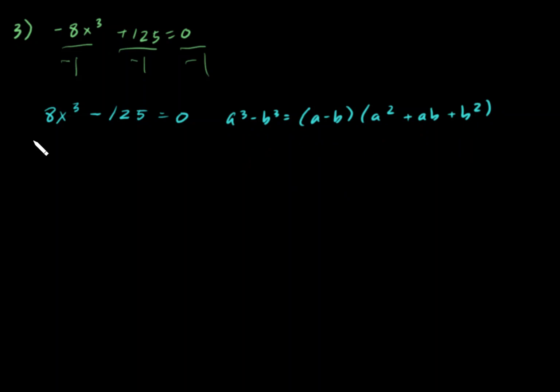First, we're going to find out what A equals, and then we're going to find out what B equals. A is the cube root of this, so two times two times two equals eight, and x times x times x equals x to the third.